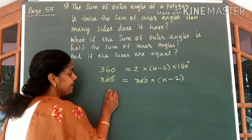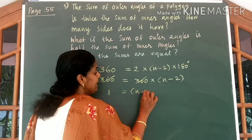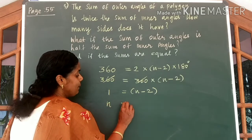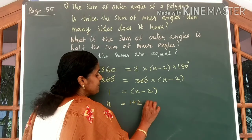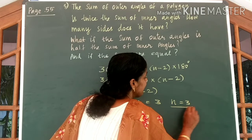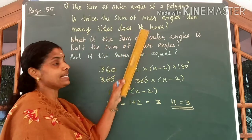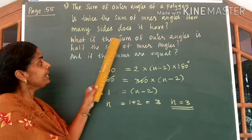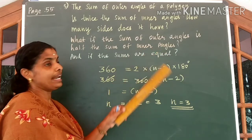What will remain? You will get 1 is equal to n minus 2. So n will be equal to 1 plus 2, which is equal to 3. The number of sides is equal to 3 — that is the answer for the first question. Now come to the second part of the question: what if the sum of outer angles is half the sum of inner angles?